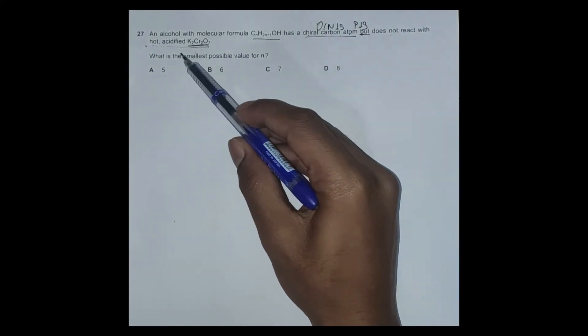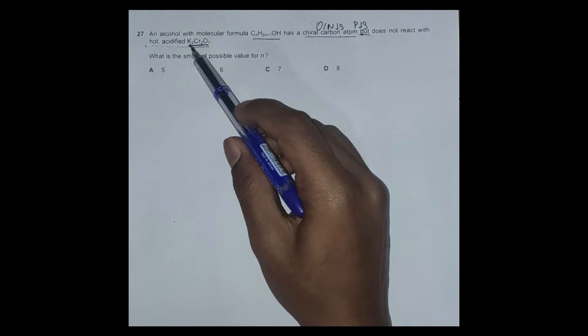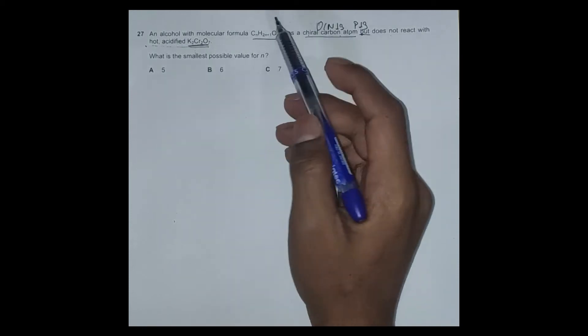Does not react with hot acidified potassium dichromate means our organic compound should be a tertiary alcohol, because both primary alcohol and secondary alcohol react with acidified K2Cr2O7.